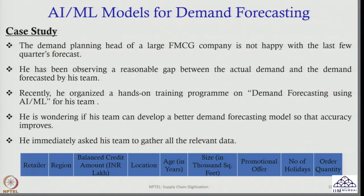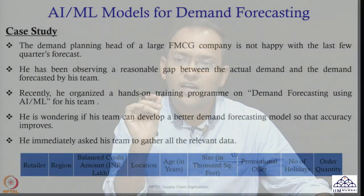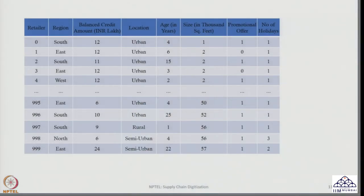For each retailer, I have seven independent variables and one dependent variable which is order quantity. I need to predict for a specific retailer how much order they will be placing to us. If I can predict it properly, then I can actually produce accordingly — my production plan will be good and customers will be happy because whatever quantity they are asking, I will be able to give it to them. With these seven independent variables and one dependent variable, the team collected the data. Looking at this data, we have 1,000 retailers.